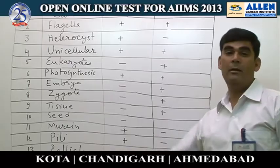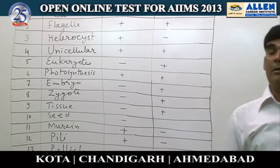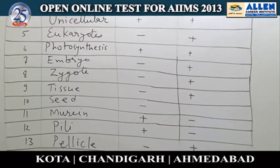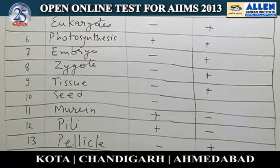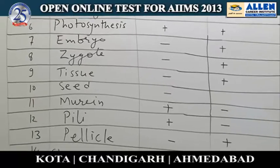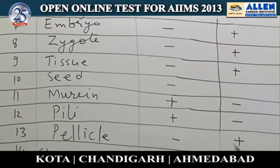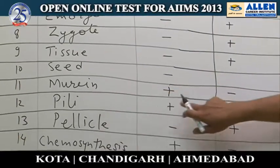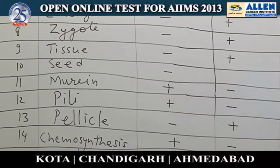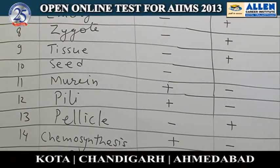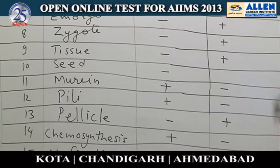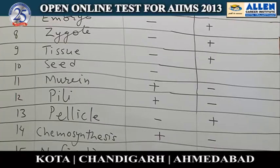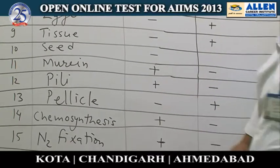Pili are present in bacteria and are specially meant for making attachment. The presence of pili is only and only a character of Monera — pili are not found in any eukaryote or other kingdom.